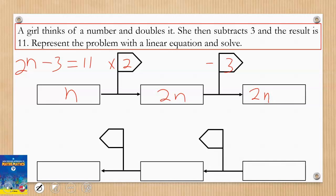The result becomes 2n - 3. So we're done with the left-hand side. On the right-hand side we start with 11. Here we did subtraction, so I'm going to do addition. When you add 3 to 11 you have 14.